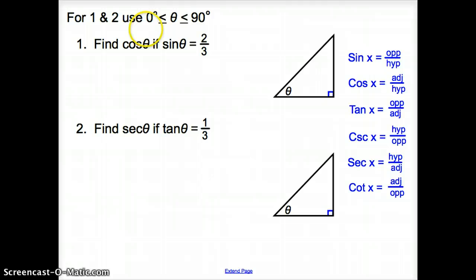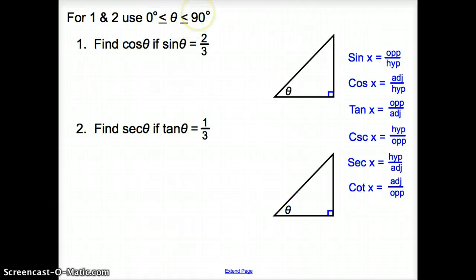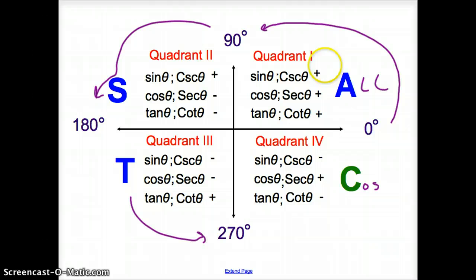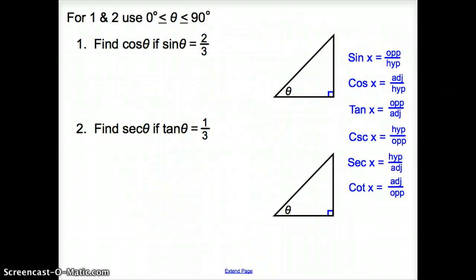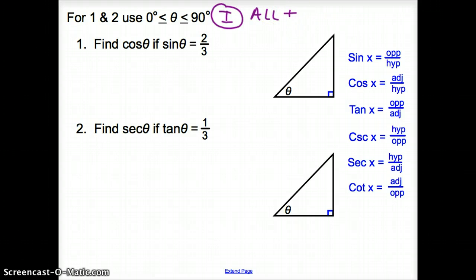For problems one and two, we use zero degrees ≤ theta ≤ 90 degrees. That means we are using the first quadrant. Zero degrees to 90 degrees falls in quadrant one, so we want to use quadrant one for the first two problems. Note that all of the trig functions in quadrant one are positive.